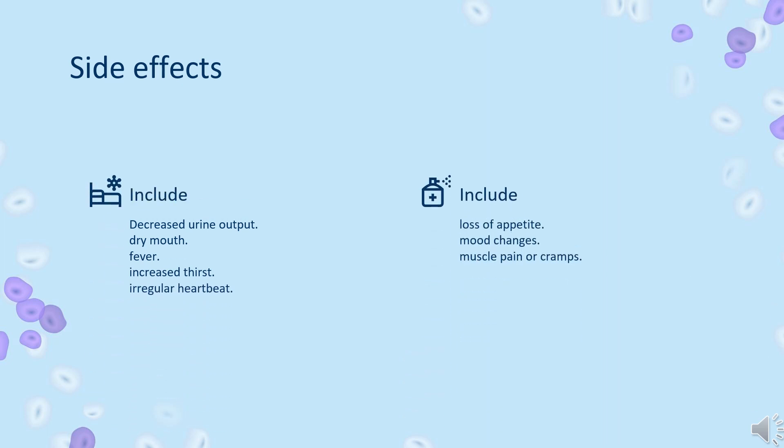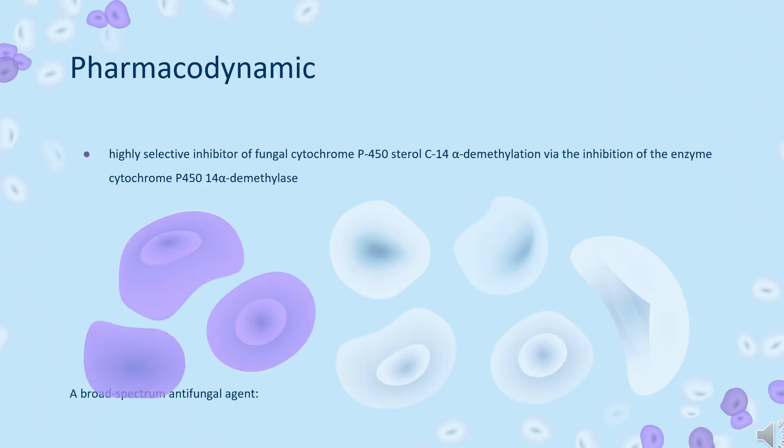Side effects include: decreased urine output, dry mouth, fever, increased thirst, irregular heartbeat, loss of appetite, mood changes, muscle pain or cramps.